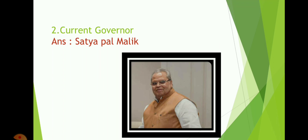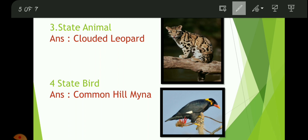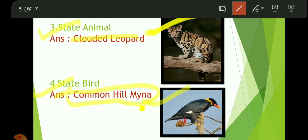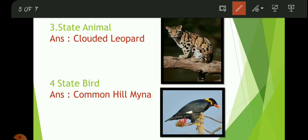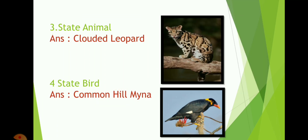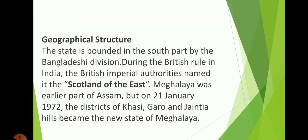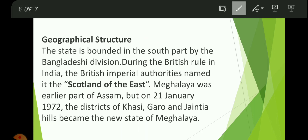The state animal is the Clouded Leopard — this picture in front of you is the Clouded Leopard. The state bird of Meghalaya is the Common Hill Myna — this picture is the Hill Myna. You should remember all these images in front of you. Let's move forward to the geographical structure.